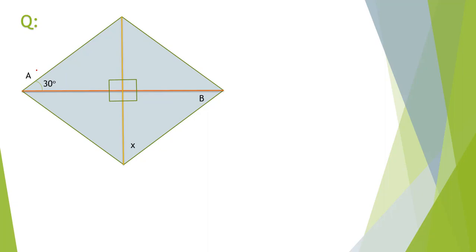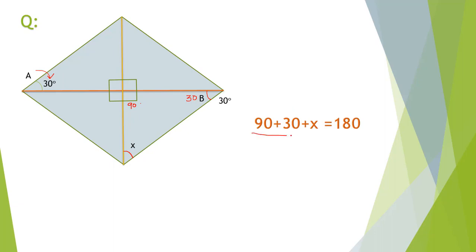Angle A is 30 degrees and you have to figure out angle X. In a rhombus, the triangles inside are congruent. Angle A corresponds to angle B, so if A is 30, B is also 30. Now we know two angles of the triangle. One angle is 90 degrees, so we use the equation to find the missing angle. Angle X is 60 degrees.